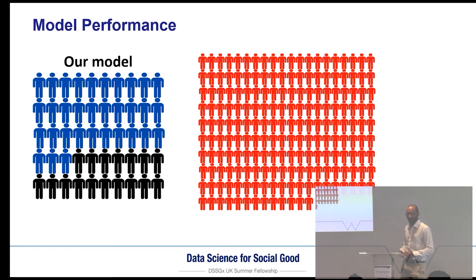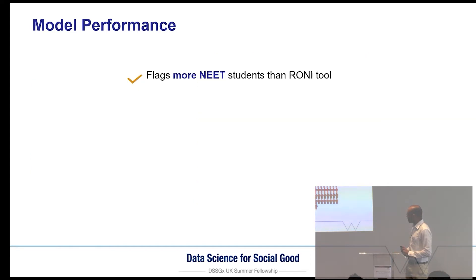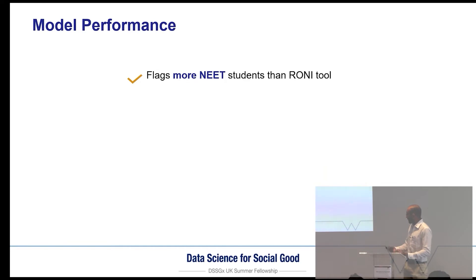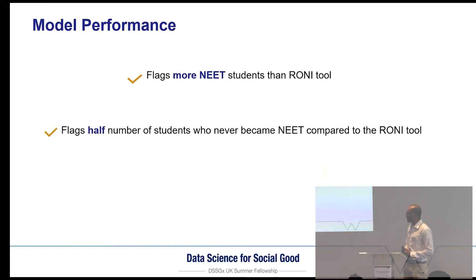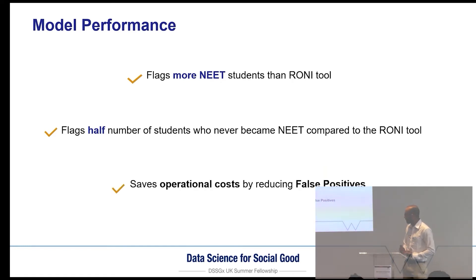However, the big difference between RONI and our model is in the number of false positives. RONI flags many students that are actually EET — over 300 in a single year. In contrast, our model cuts that down by half, saving valuable time and resources. In summary, our model flags more students that actually end up NEET, and we flag about half the number of students that don't actually end up NEET, saving valuable operational costs and time for both the council and schools.